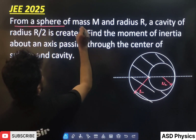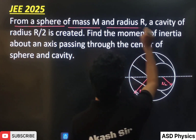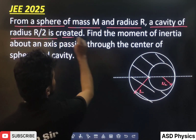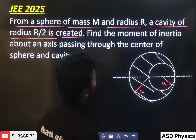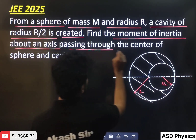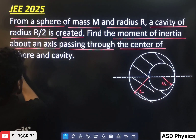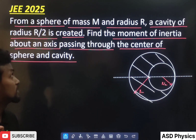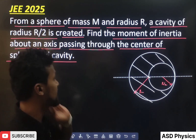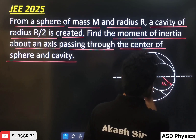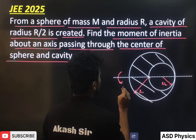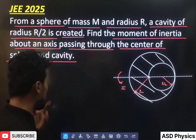Please see here. From a sphere of mass M and radius R, a cavity of radius R/2 is created. Find the moment of inertia about an axis passing through the center of the sphere and the center of the cavity. So this is the center of the sphere and this is the center of the cavity — we have to calculate the moment of inertia about this axis.